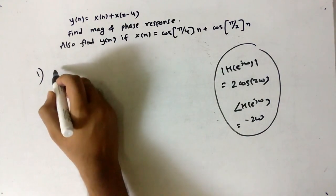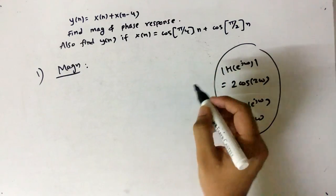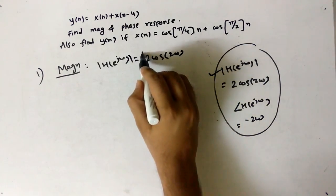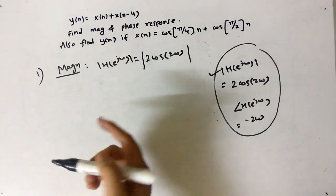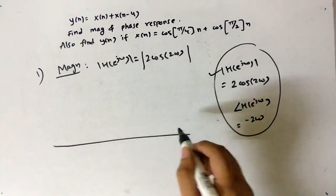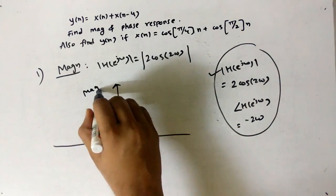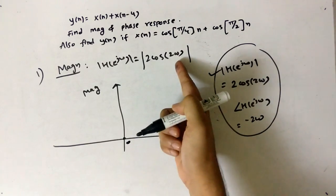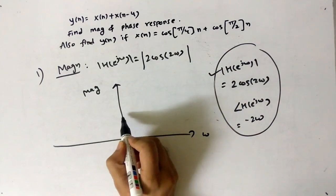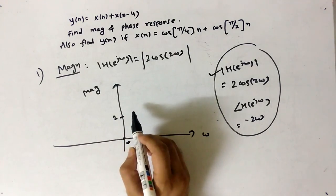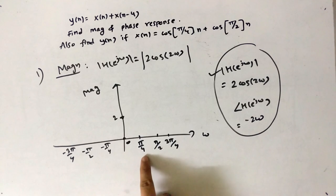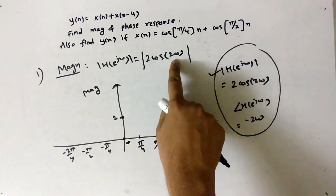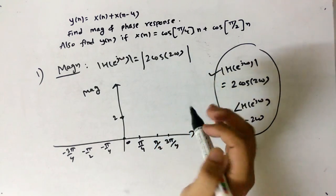Now we draw the magnitude plot. The equation is 2|cos(2ω)|. On the y-axis we have magnitude (amplitude) and on the x-axis we have frequency ω. At ω = 0: 2·cos(0) = 2·1 = 2. At ω = π/4: 2·cos(π/2) = 2·0 = 0. Similarly at ω = -π/4: cos(-π/2) = 0, so magnitude = 0.